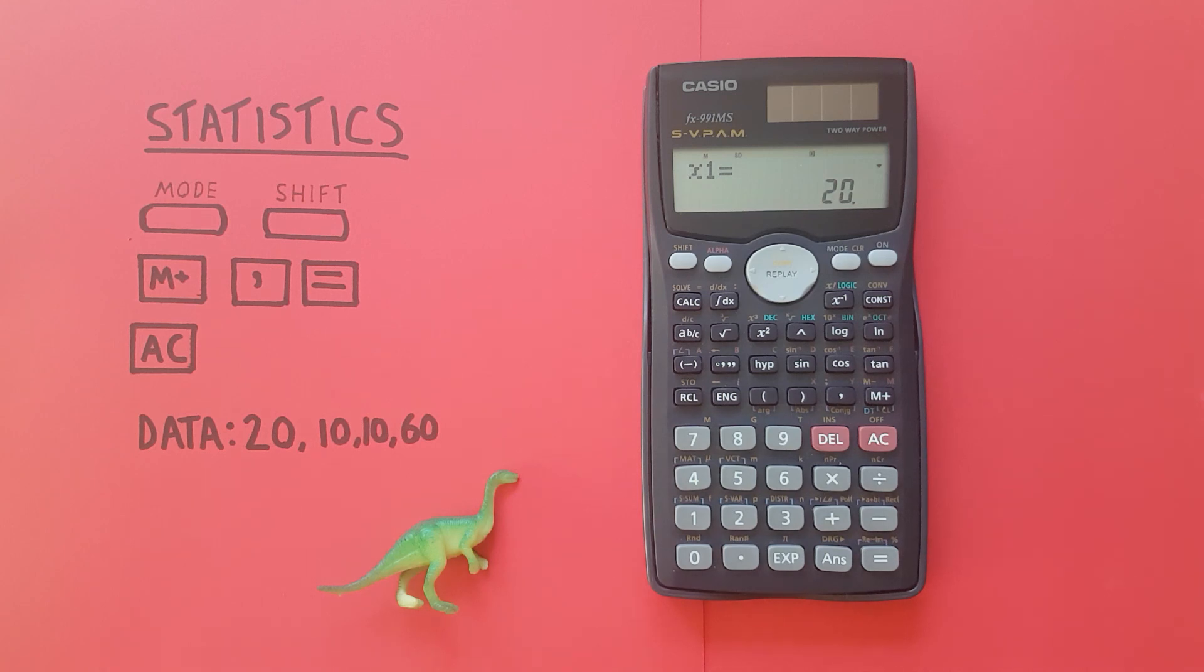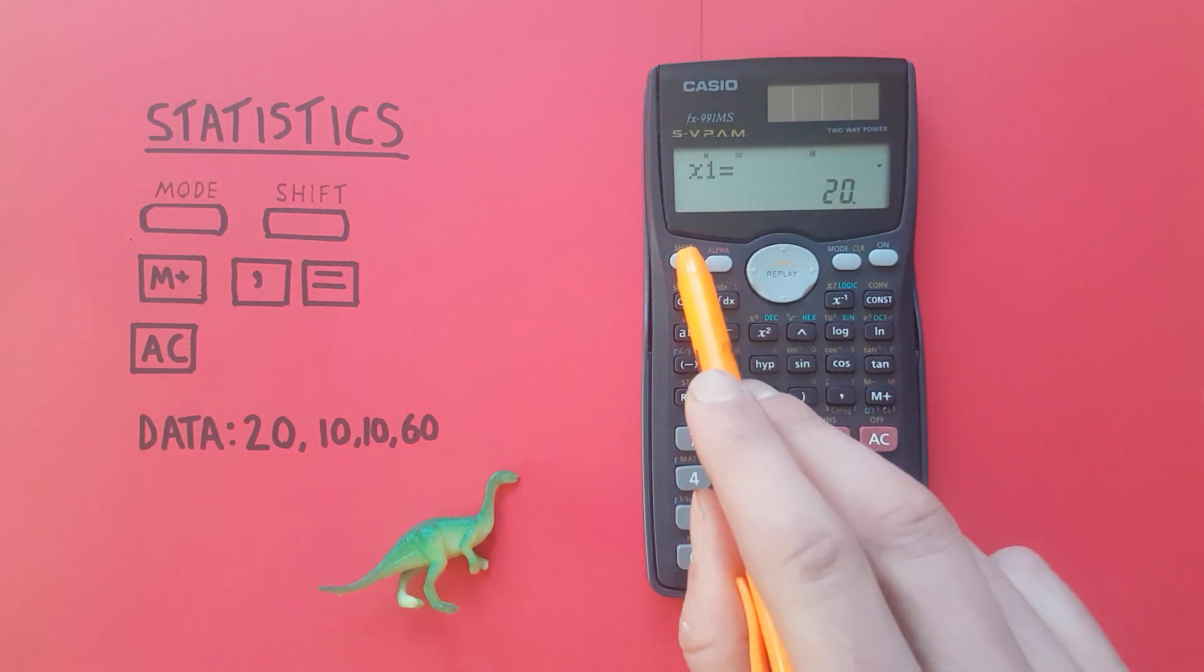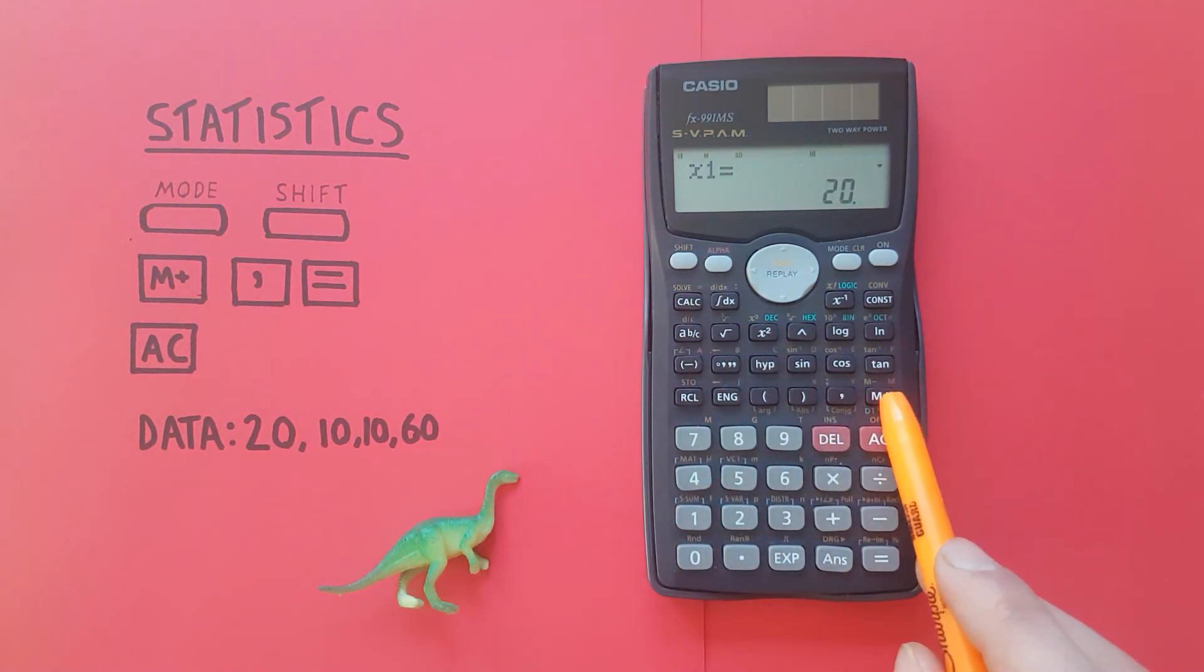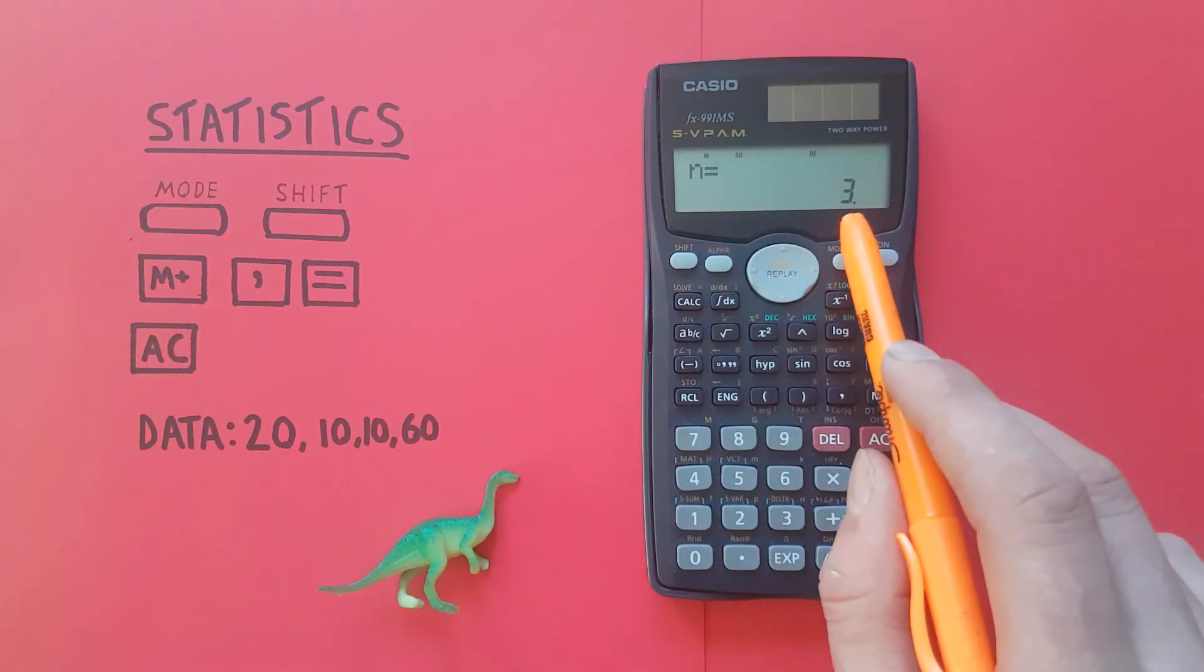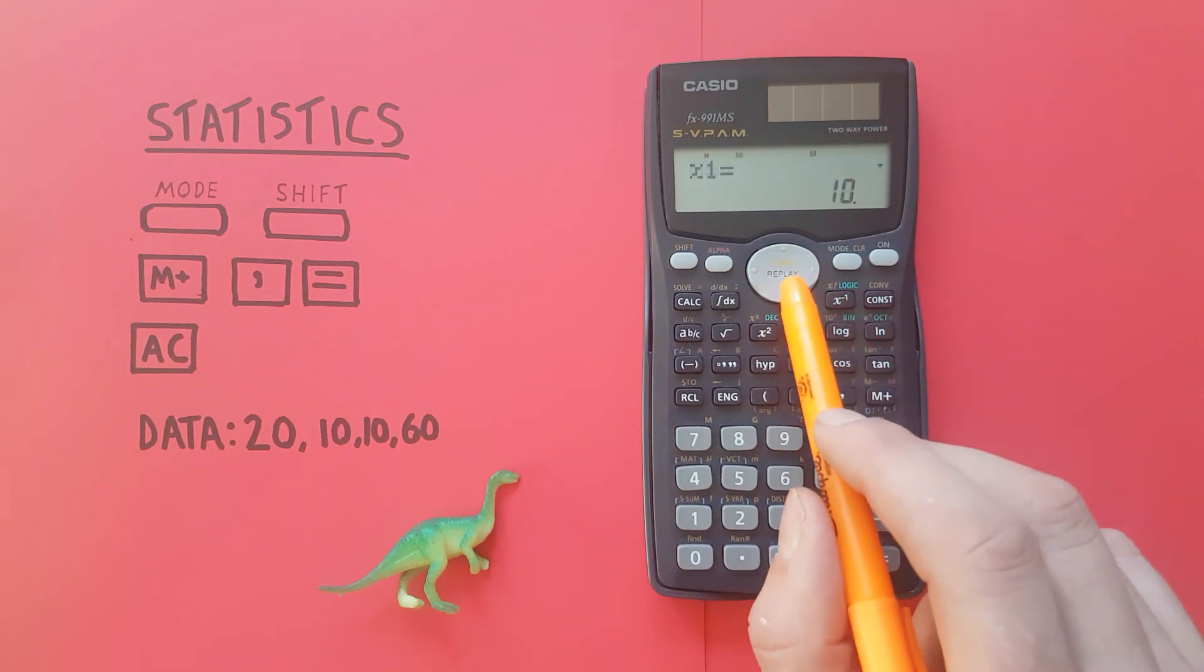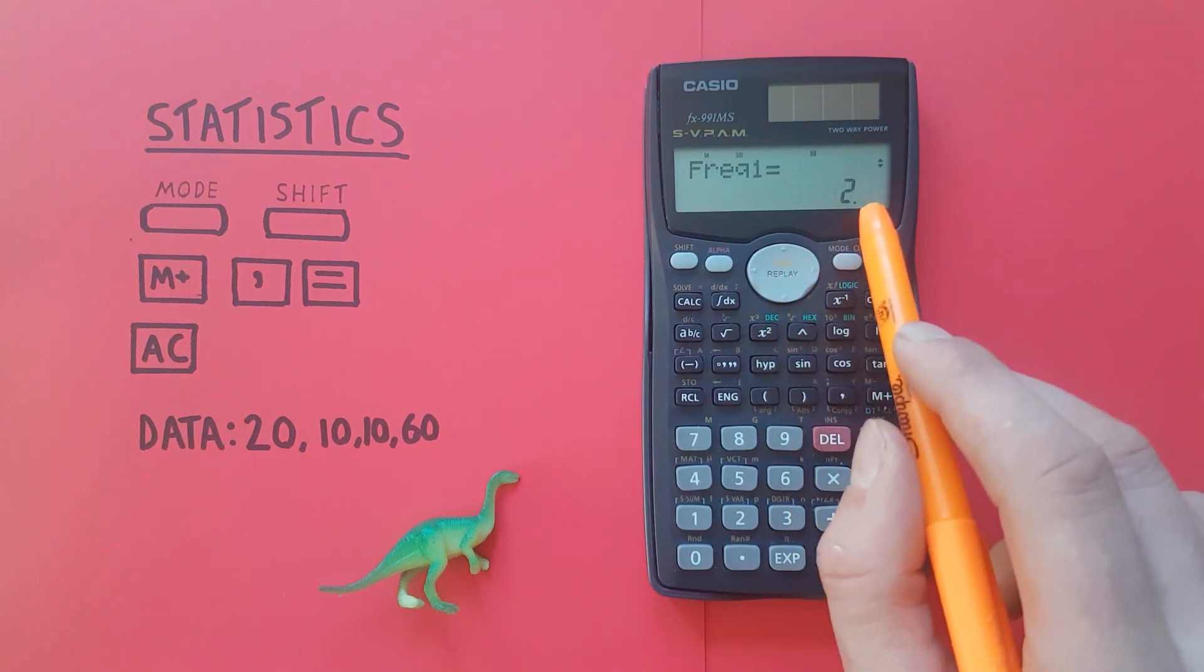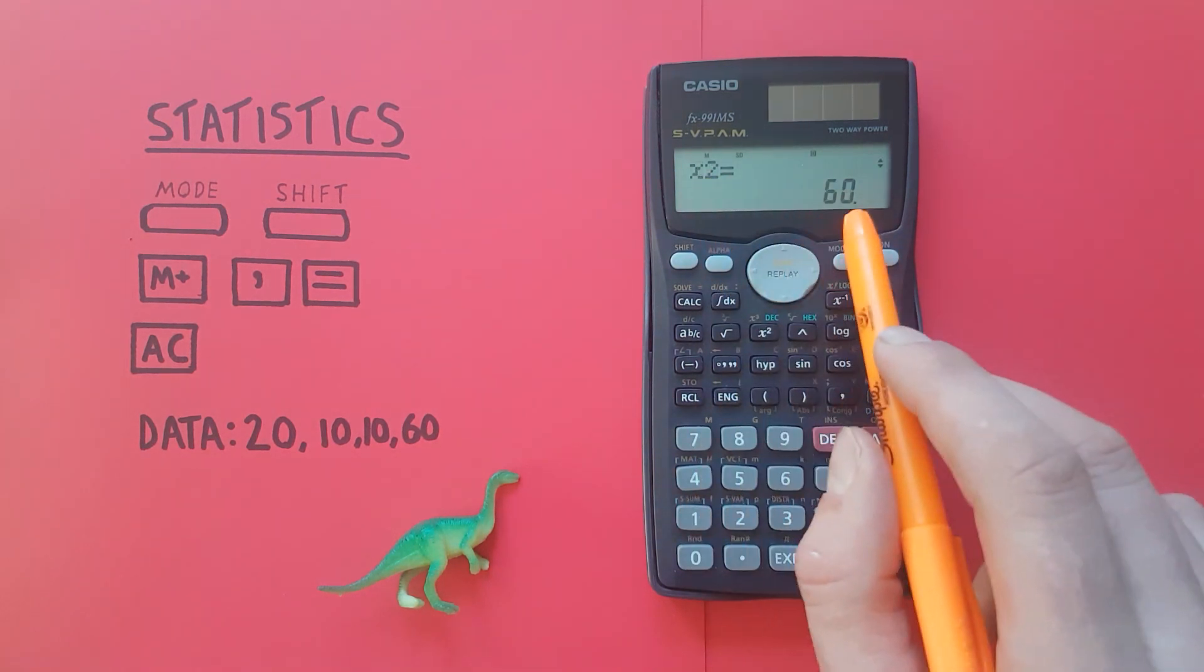If we made a mistake or want to remove one of our pieces of data, let's say we didn't actually want 20 in there. That was a mistake. We scroll to it and then press the shift M plus key which is M minus and you see as soon as we do that we get n equals 3, letting us know we only have three items in our data set which we can see as x1 has now become the 10 and x2 has become the 60.